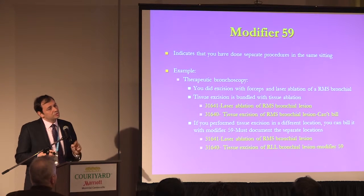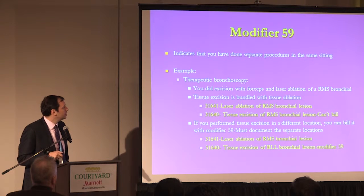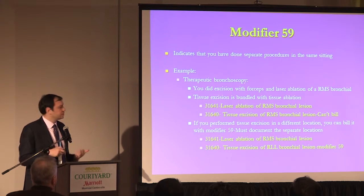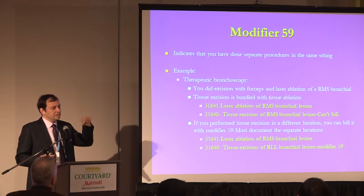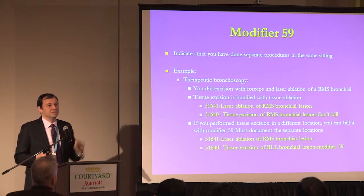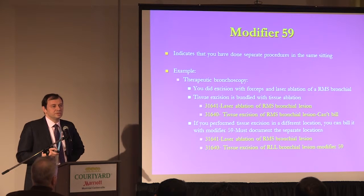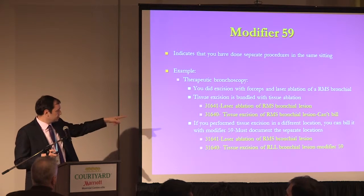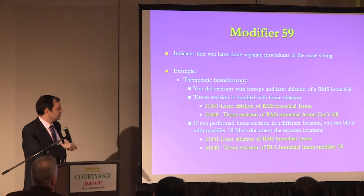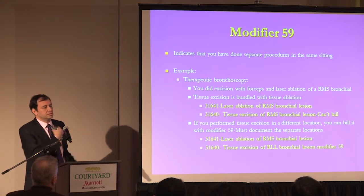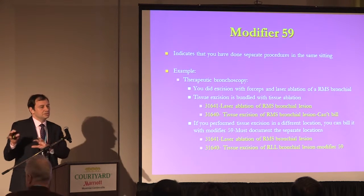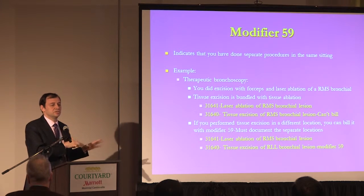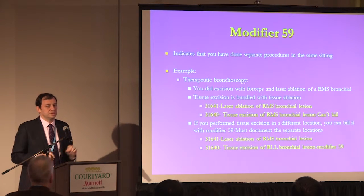For interventional pulmonologists doing therapeutic bronchoscopy, the same applies to laser ablation and mechanical tissue excision. Even if you spend two hours using laser, electrocautery, and rigid and flexible forceps, excision is bundled with ablation and code 31640 will not be paid — unless it's in a different location. If the patient has two lesions — one in the trachea and one in the right main stem — you can bill 31641 for laser and attach modifier 59 to the excision code, documenting each in a different location.